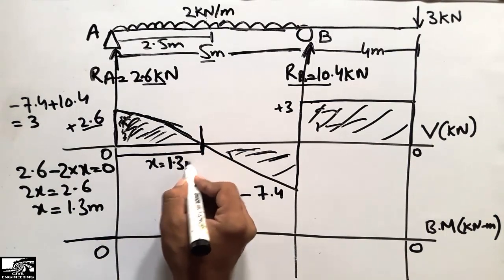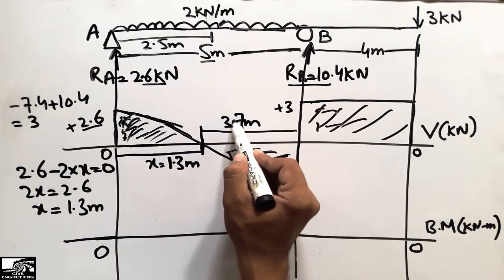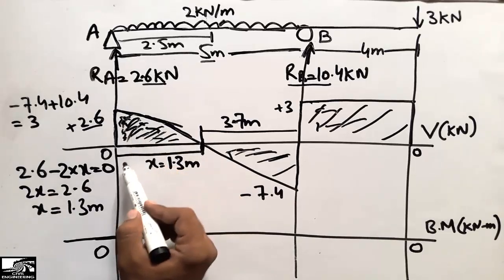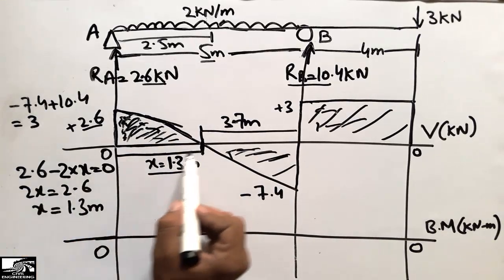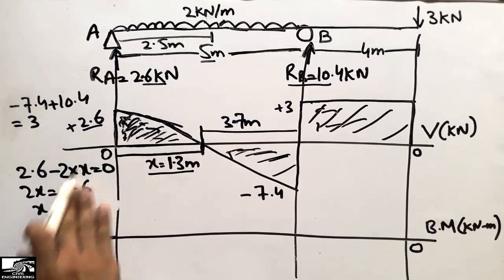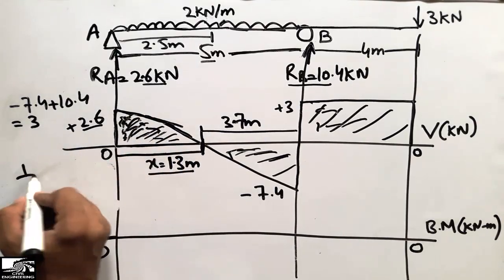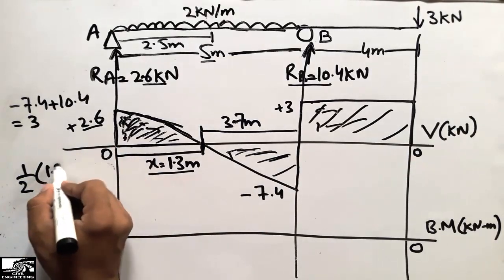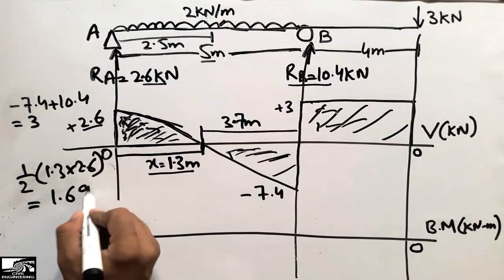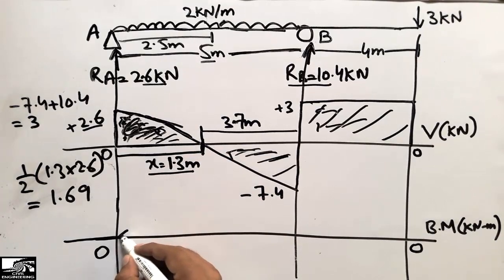So this distance is 1.3 meters, and subtracting from 5 gives the remaining distance of 3.7 meters. The area of the first triangle is half times base times height: half into 1.3 into 2.6 equals 1.69 kilonewton-meters. This is the area of the first shape, so we move up to 1.69 on the bending moment diagram.